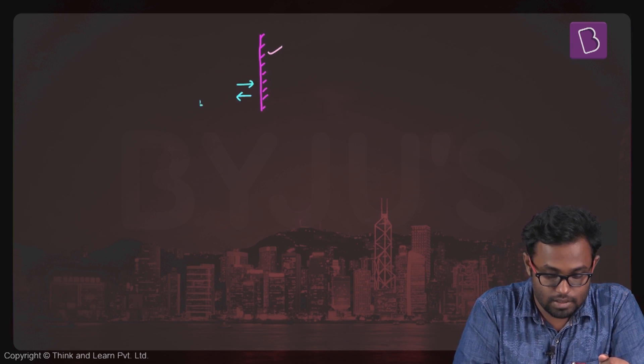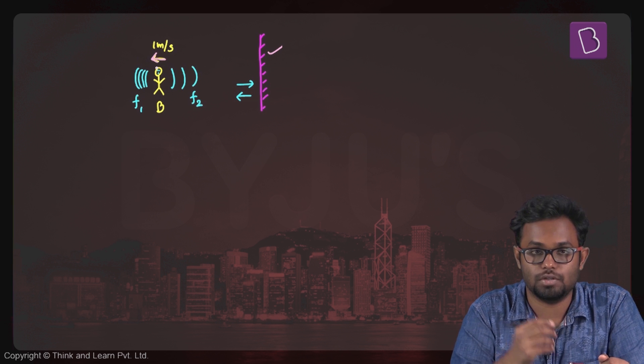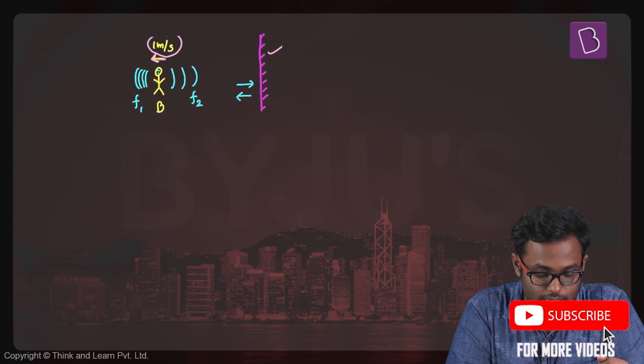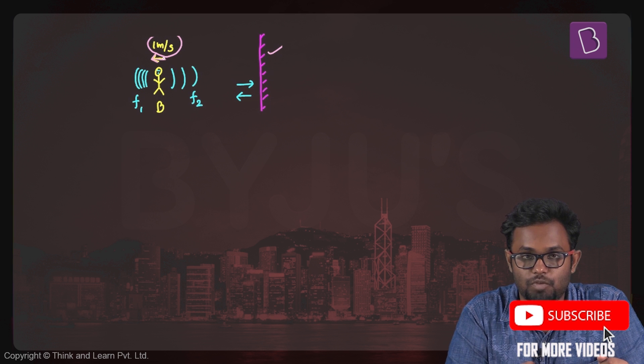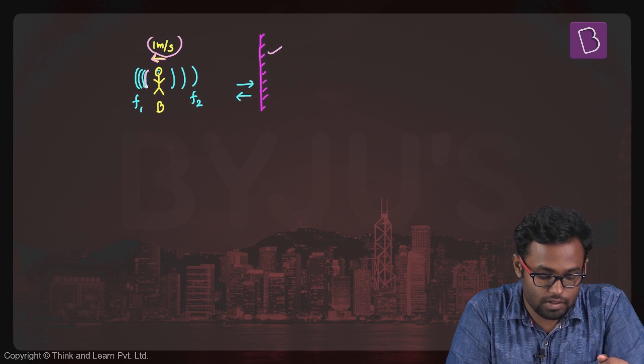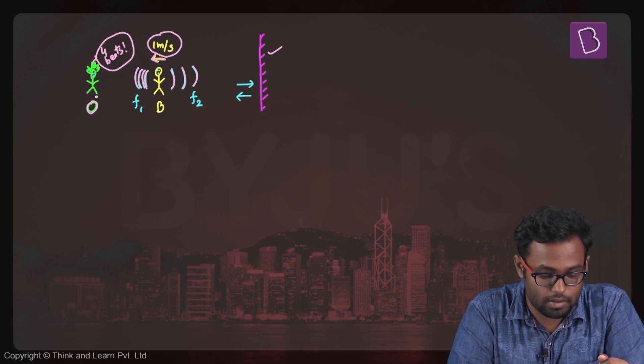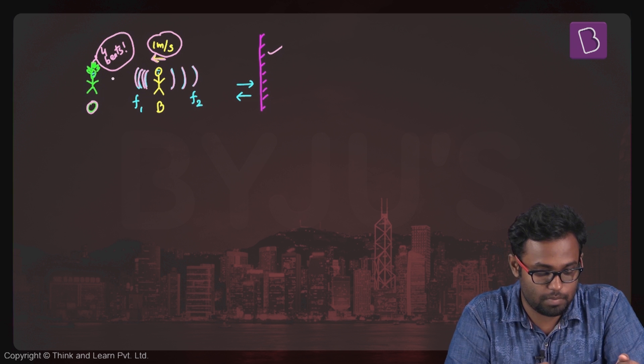Now here is a situation. This is our wall and this is the person who is walking away from the wall, the person who is whistling, and he's walking with a speed of one meter per second. If he's walking, then the wave fronts would be closely packed over here and there will be far apart behind the source. He's the source right, and he's walking towards this boy, which I'm representing by O.